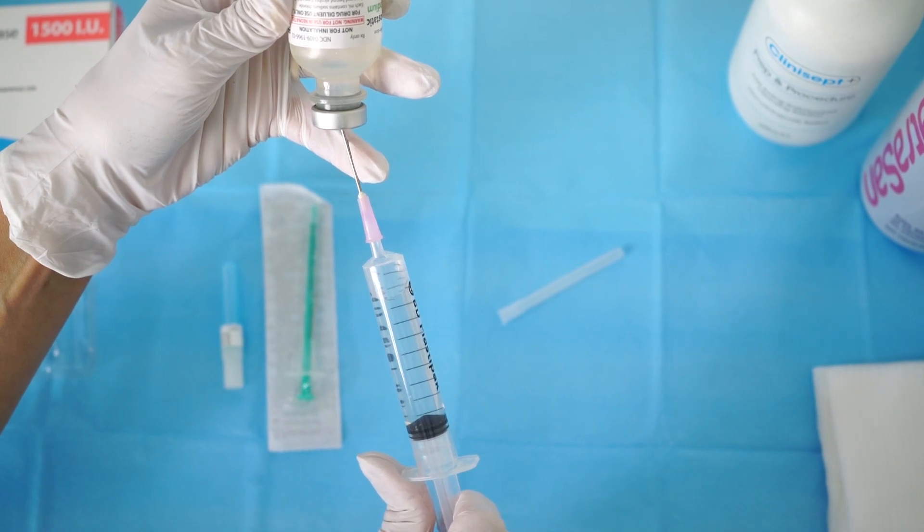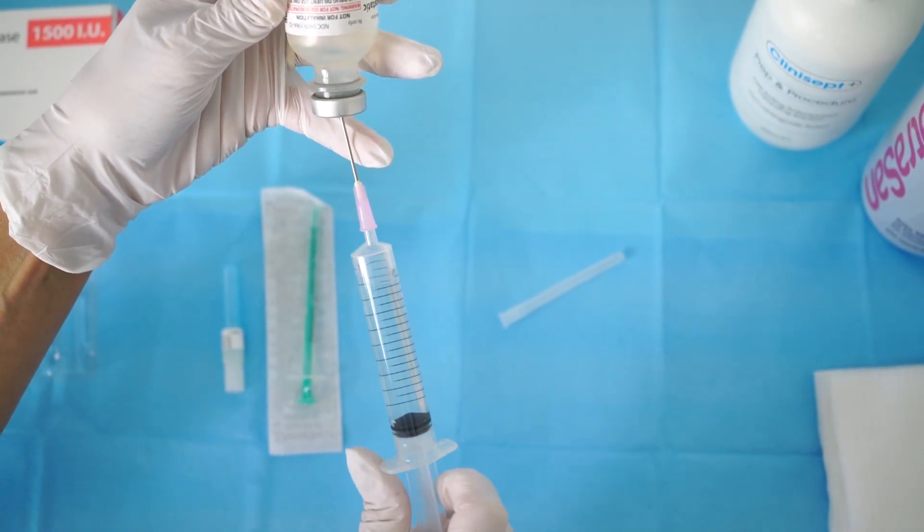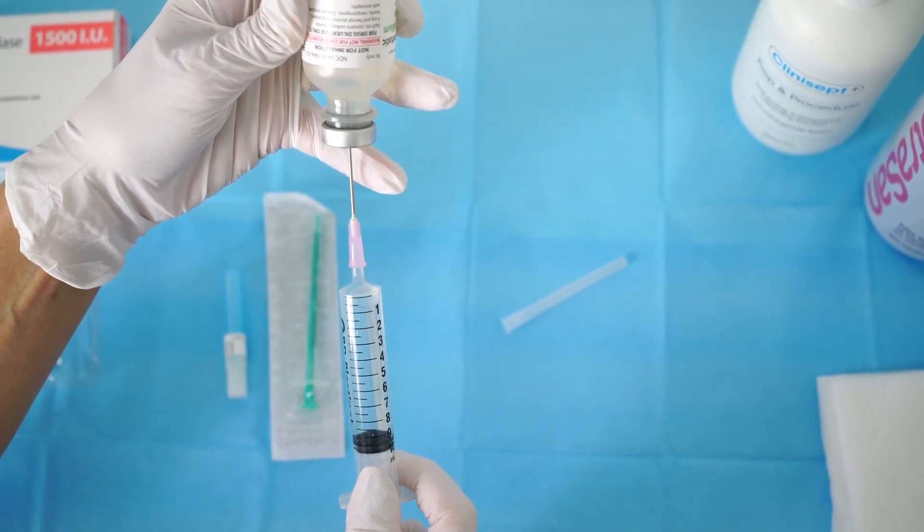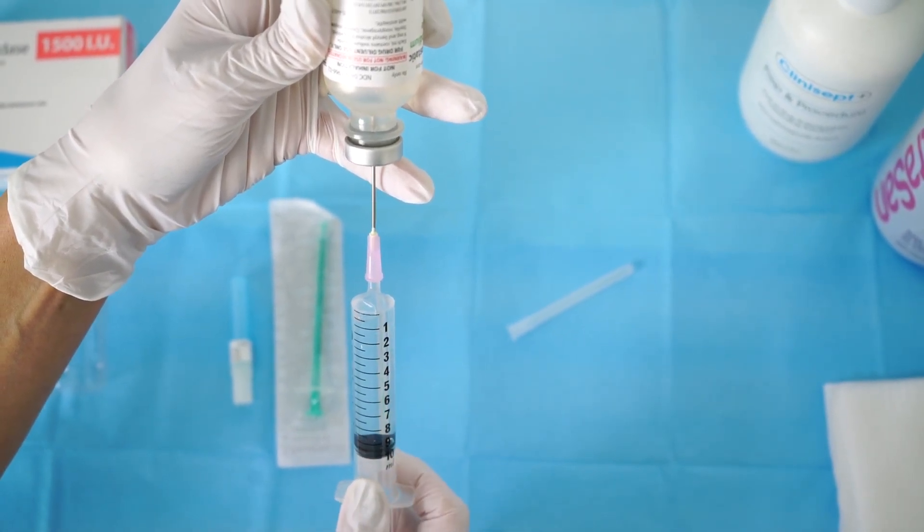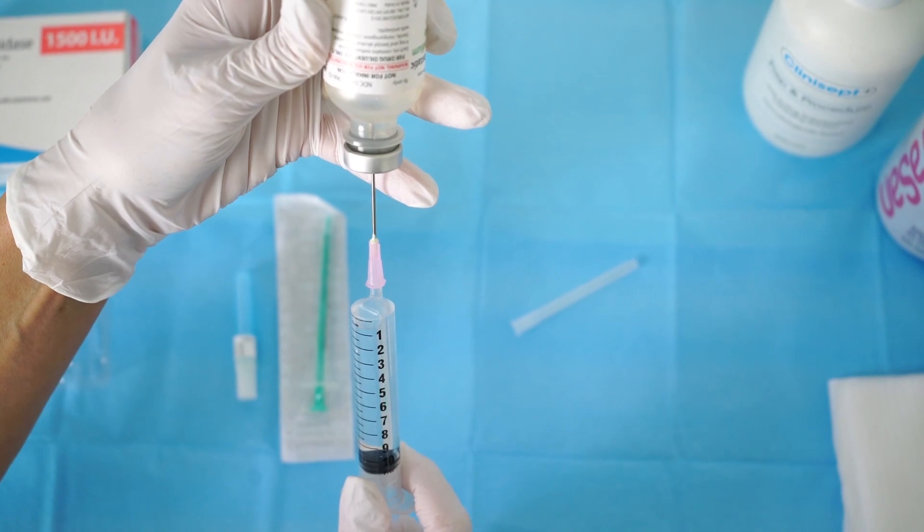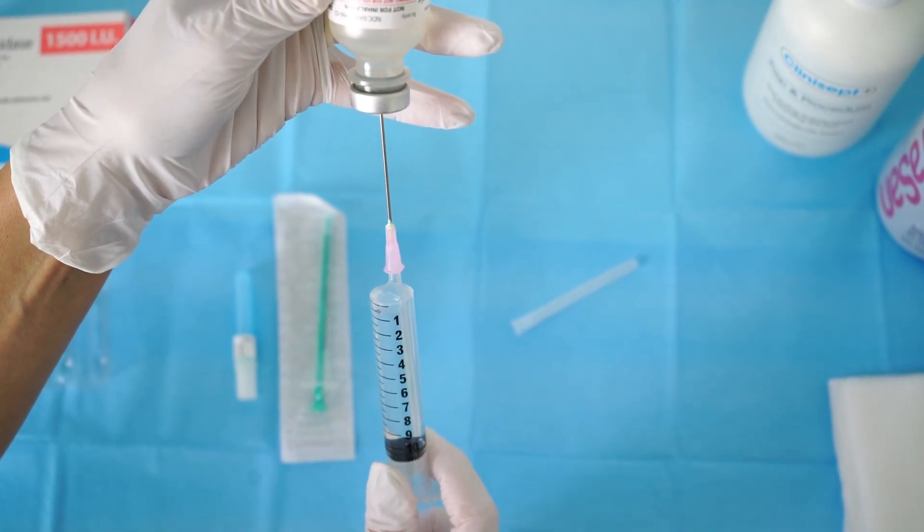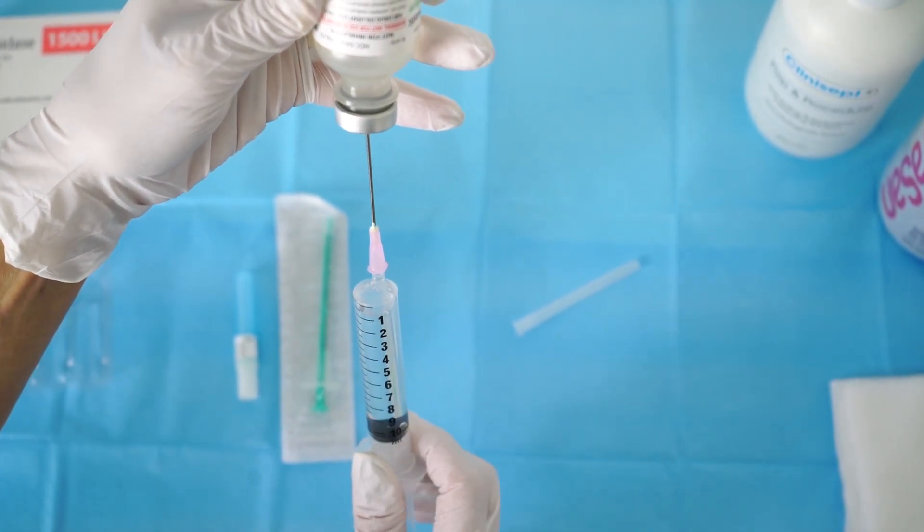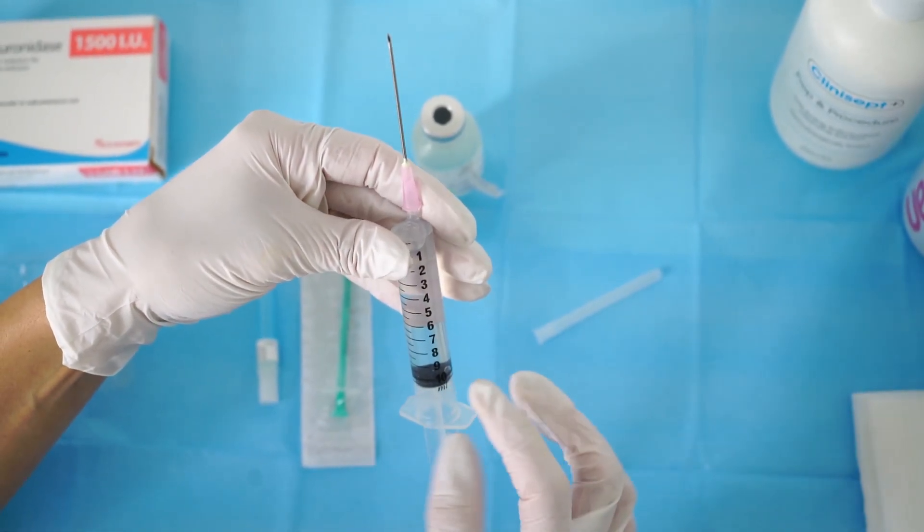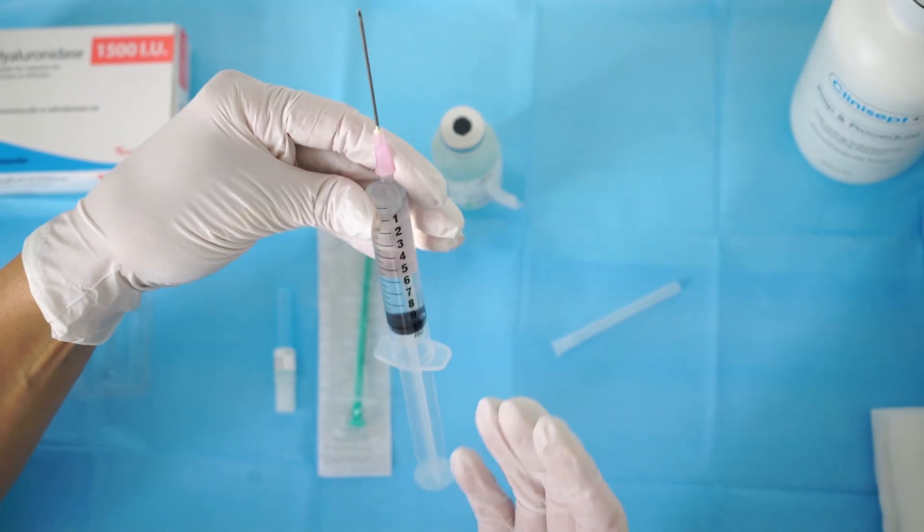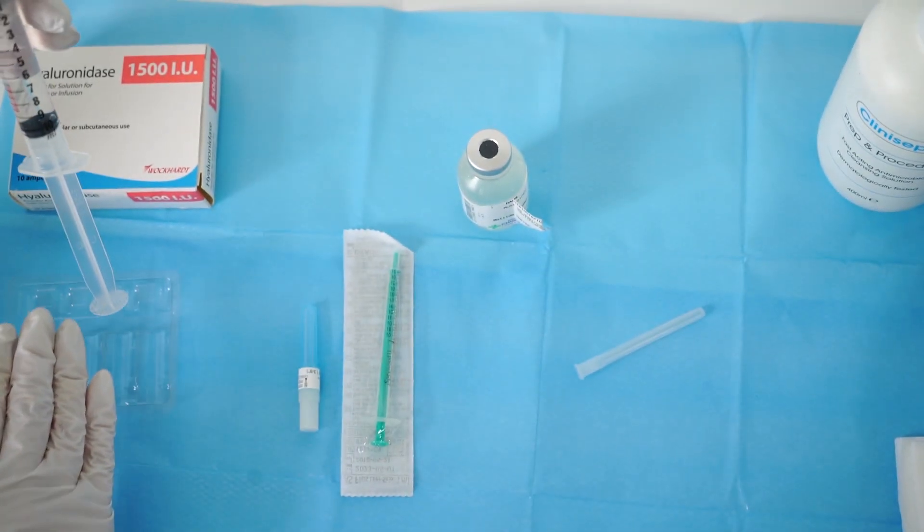We're talking here for complications only when it's superficial placement of the product, for Tyndall effect or small lumps and bumps when you want to have full control. Because what happens is, when we got the 10 ml solution, every 1 ml is going to give me 150 units.